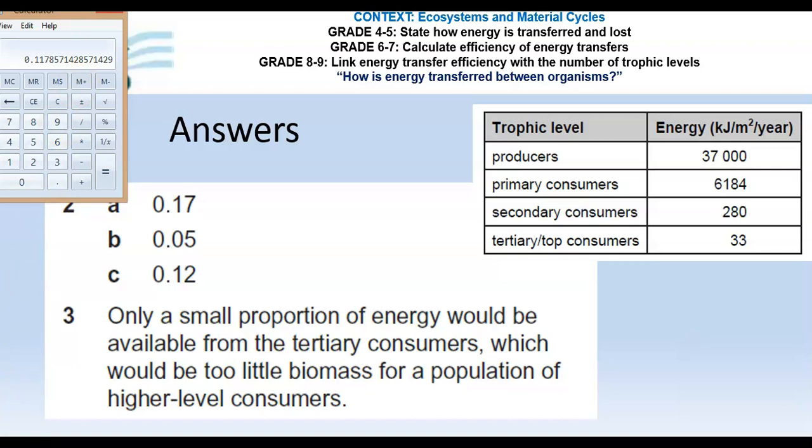Question 3 asks us to explain why there is no higher trophic level than tertiary consumers. This is all about energy. Looking at that energy value, we're getting to the point where there's less and less energy available. There's not enough biomass, not enough energy stored in biomass, for a population at the next level in the food chain. If we had an even higher level consumer, there is simply not enough biomass available to support that group of organisms.